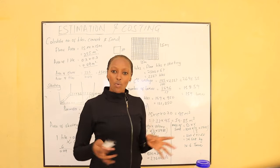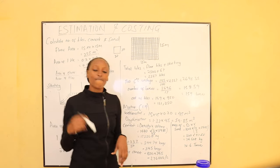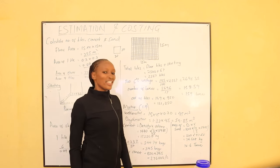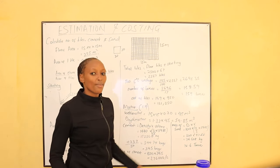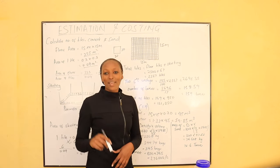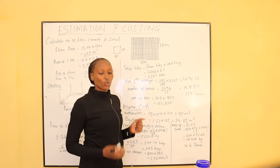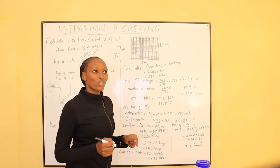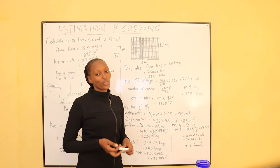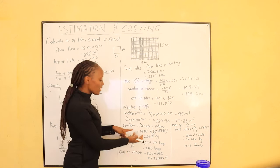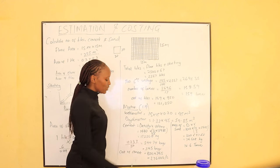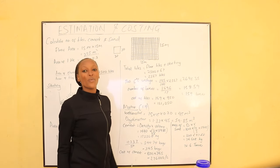When mixing cement and sand dry, the volume is bigger; when water is added, it shrinks by 33%. So to get the dry volume of mortar, we take 133% of the wet volume: 1.33 × 4.5 = 5.985 cubic meters. To get the mass of cement, we use mass = density × volume. The volume of cement in the dry mortar is 1/5 × 5.985 (since ratio is 1:4, total 5 parts). The density of cement is 1,440 kg/m³, so mass = 1,440 × (1/5 × 5.985).